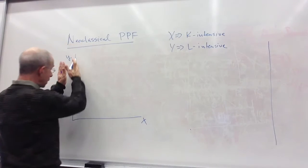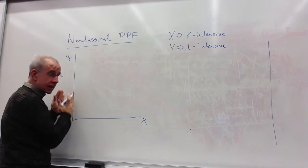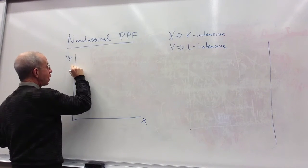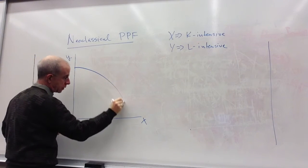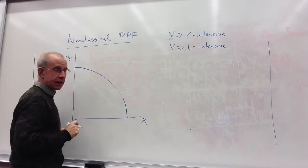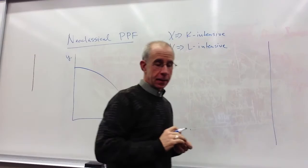So we've got the production of good Y on this axis, the production of X on this axis. Let me just draw this and then I'm going to explain it in just a moment.